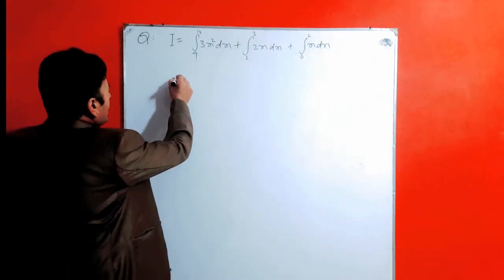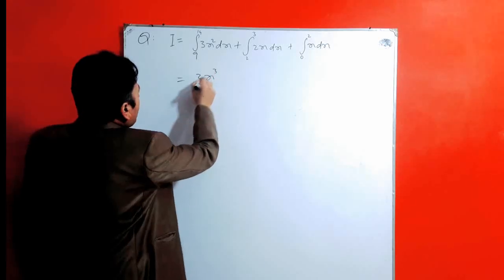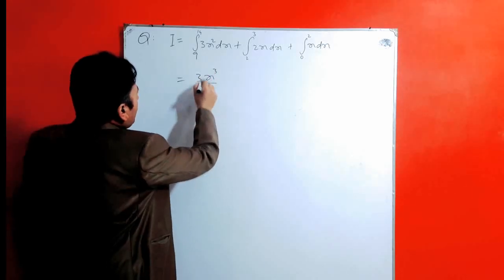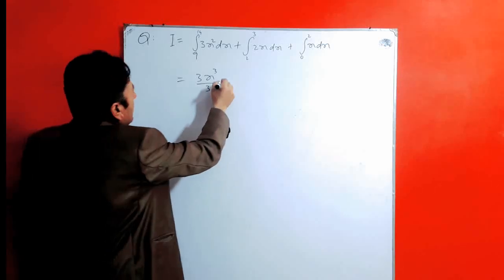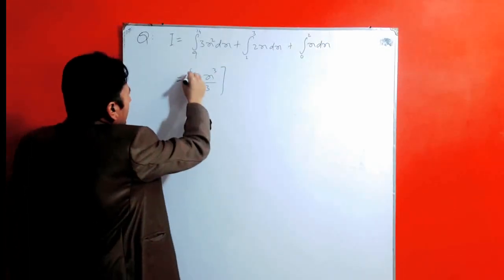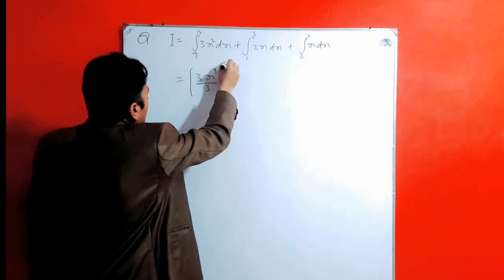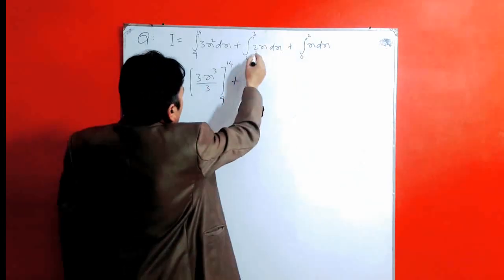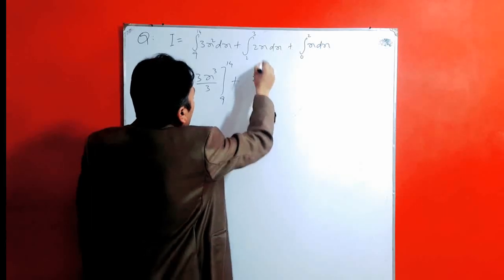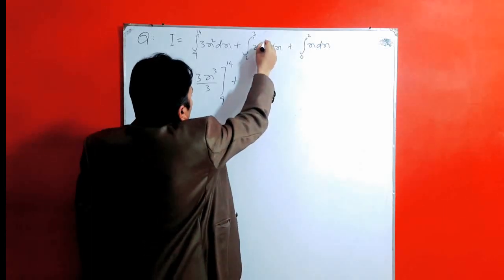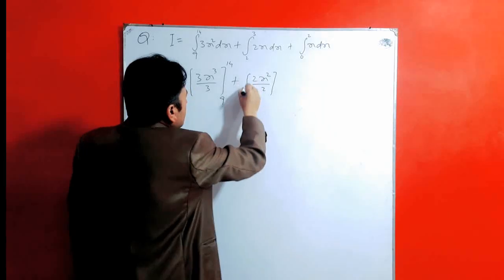Okay, we are going to solve this question. This is equal to 3x cubed by 3, after applying the power rule that is 2 plus 1 divided by 2 plus 1, which is 3, and we will then take its limit from 9 to 14. After this, we take the integration of 2x dx, so it will be 2, applying power rule 1 plus 1, divided by 2.